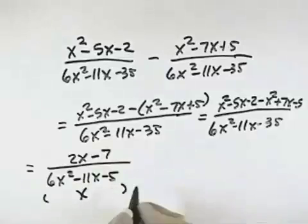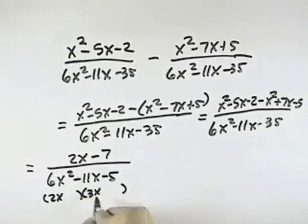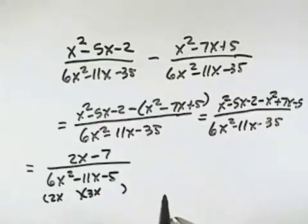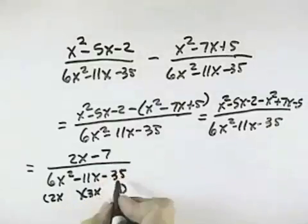Now we could try to factor the denominator to see if this will simplify. And we could try a 2x and a 3x. And sorry, I forgot my 35 here in the denominator, not a 5. So 35...